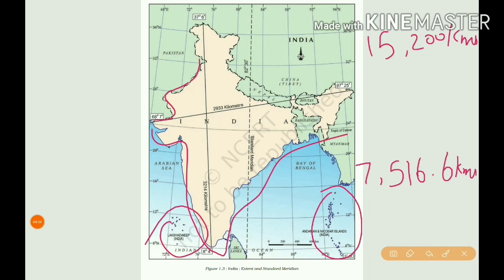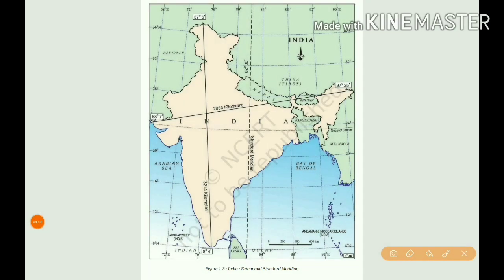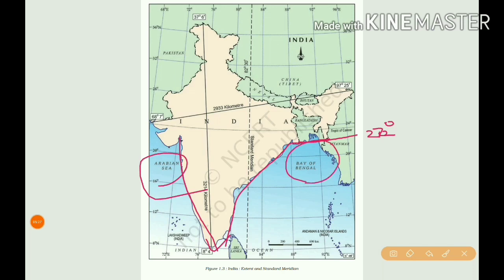India is bounded by the young fold mountains in the northwest, north, and northeast. The southern part of India, around 22°N latitude, begins to taper — meaning it becomes thin, reducing in size towards the Indian Ocean. It then divides into two seas: the Arabian Sea on one side and the Bay of Bengal on the other.